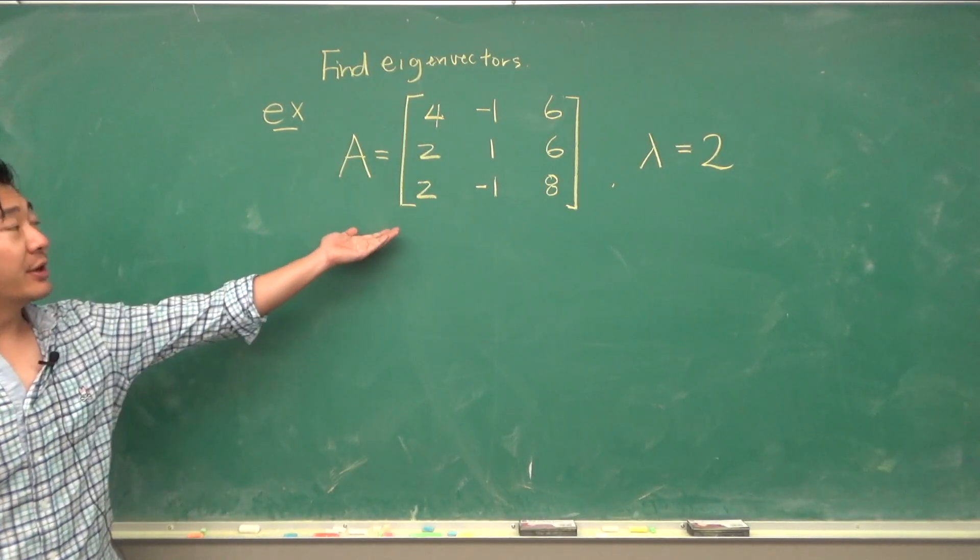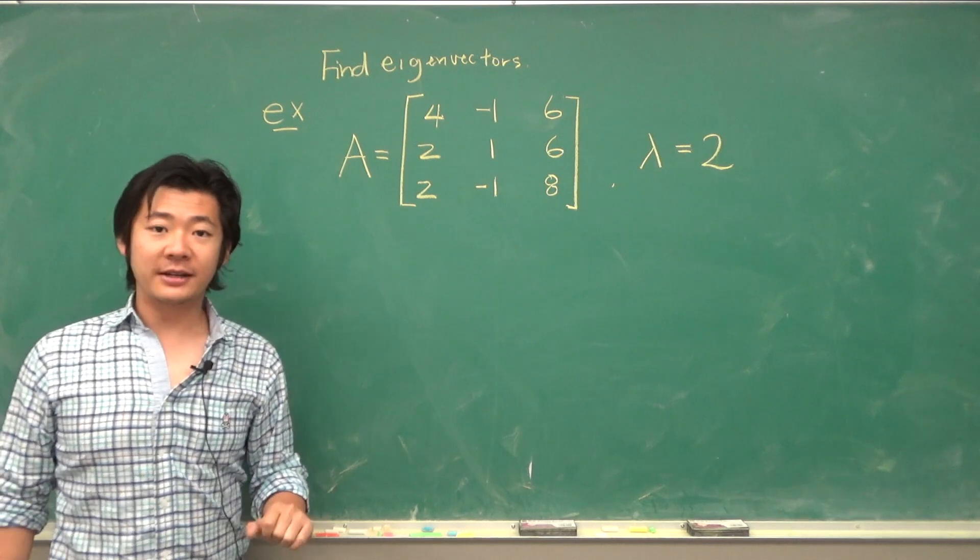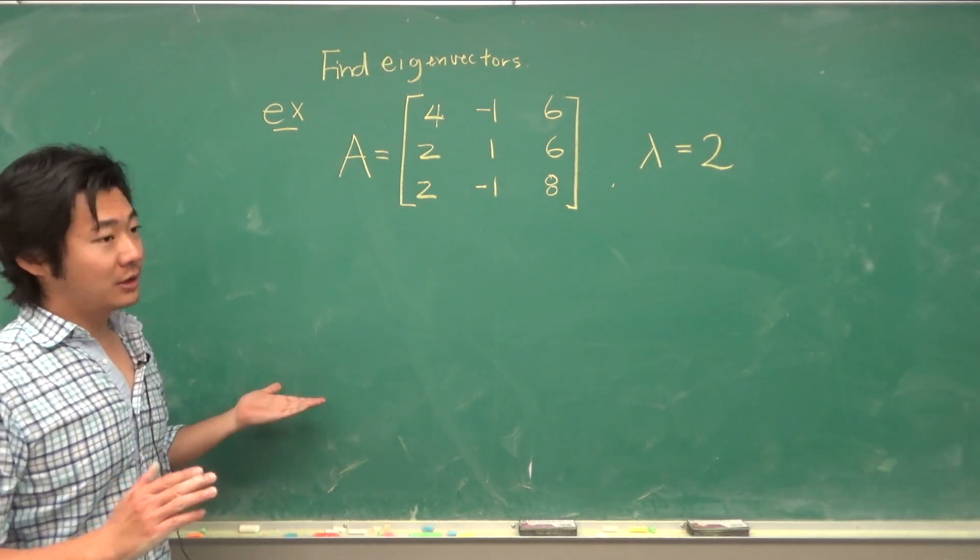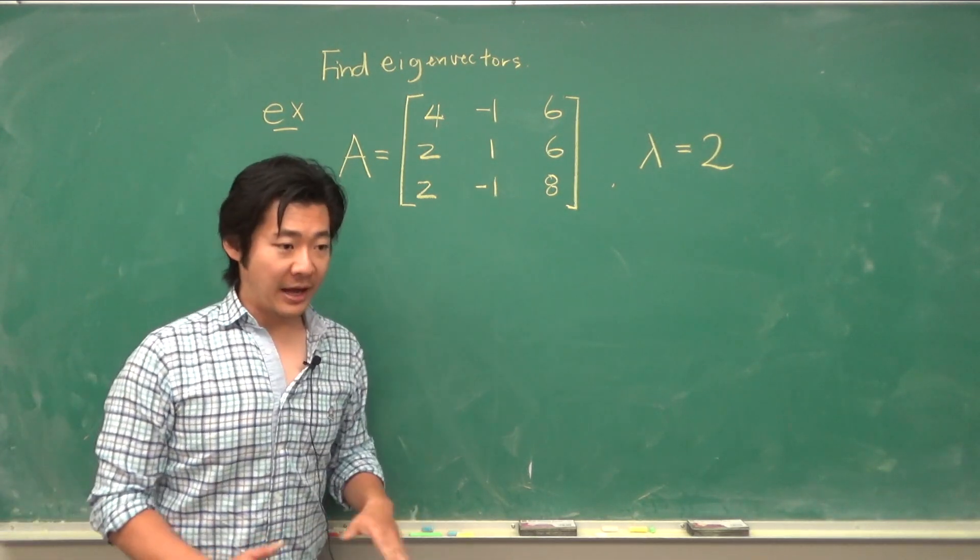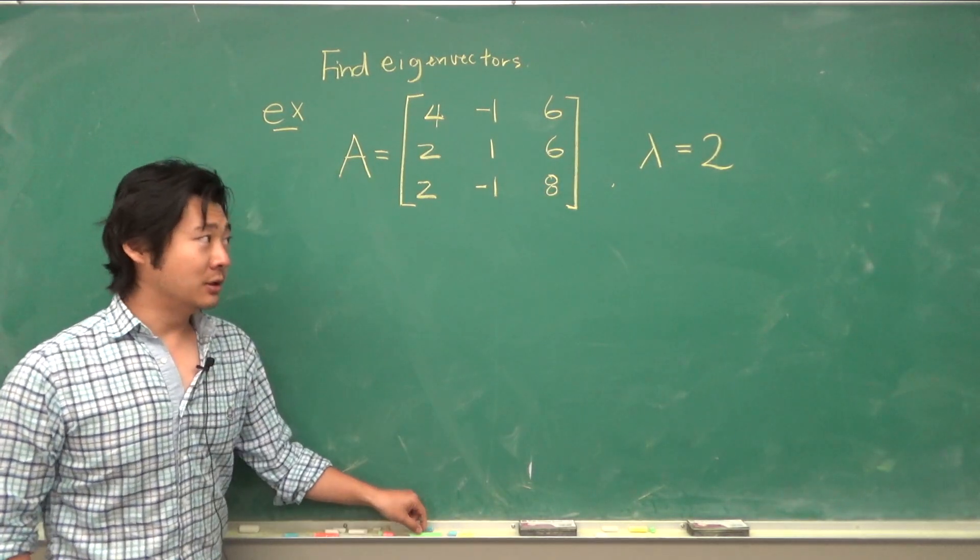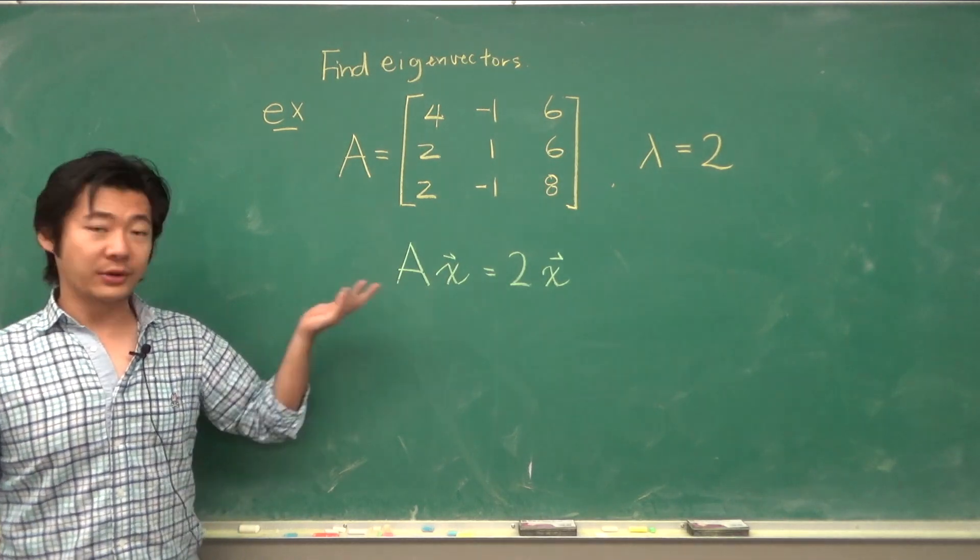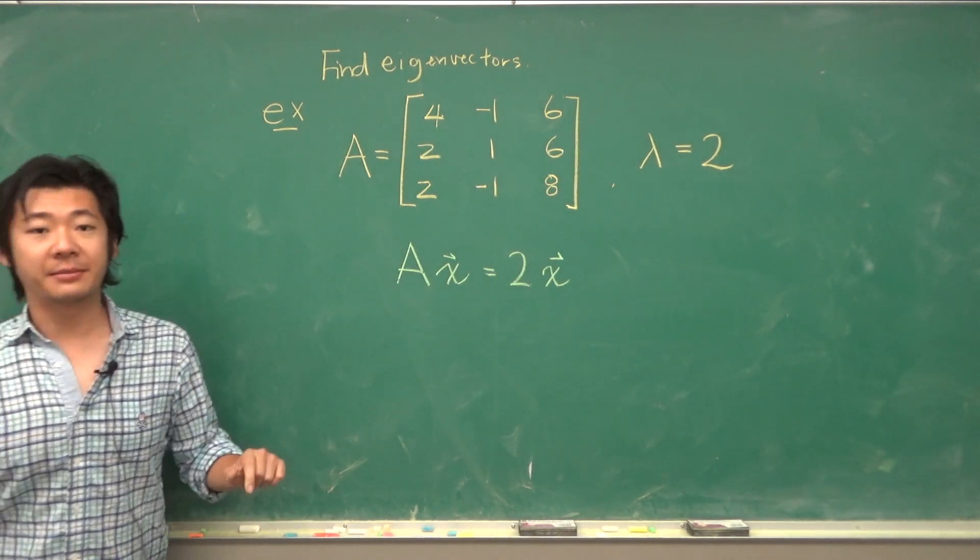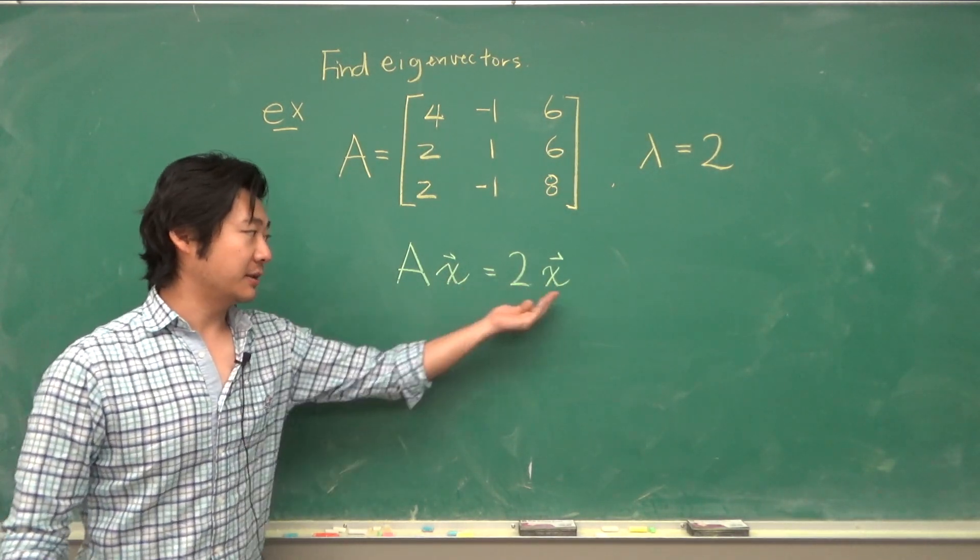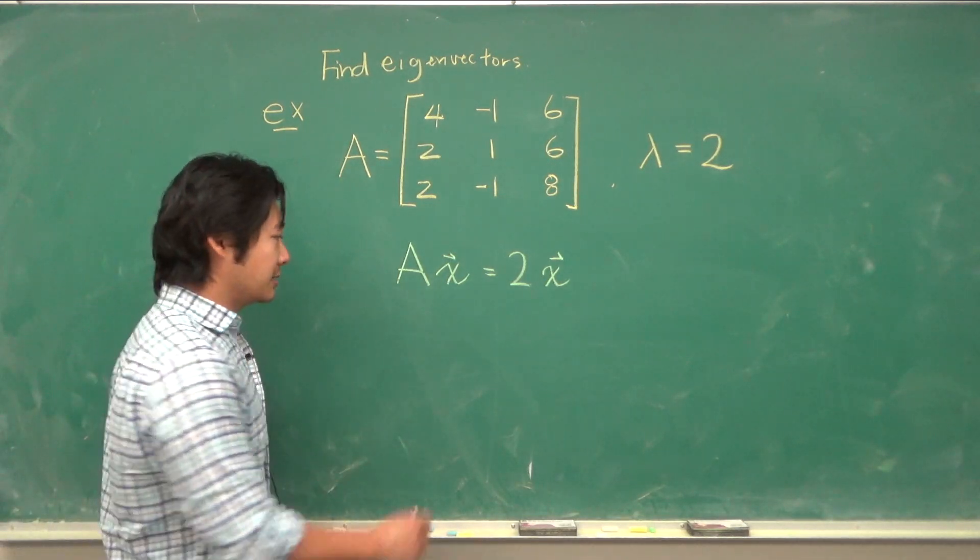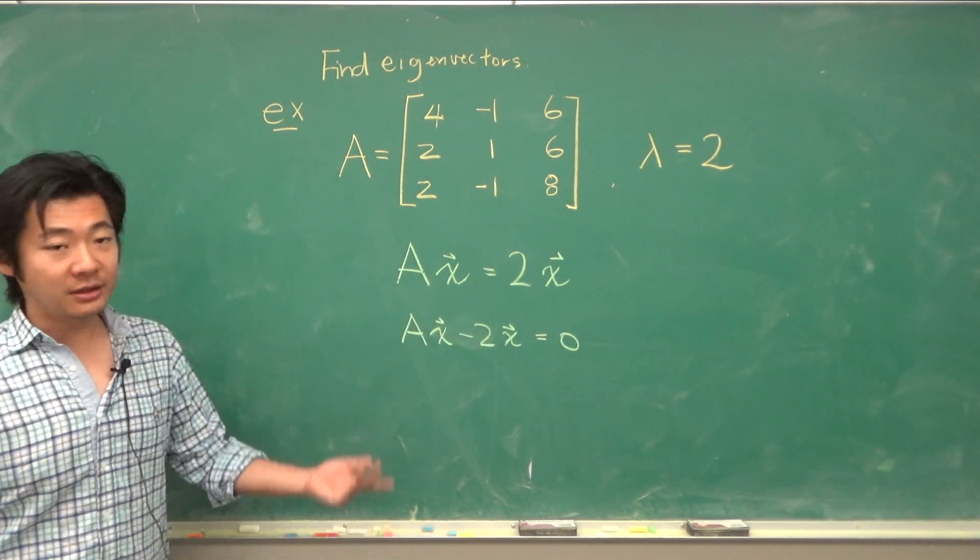Now let's consider this matrix A. What if we want to find eigenvectors, and what if we just so happen to know that an eigenvalue is 2? So what we want to do is find vectors so that it satisfies this equation: Ax equals 2 times x, where these are the same x's. This is the same equation as Ax minus 2x equals 0.